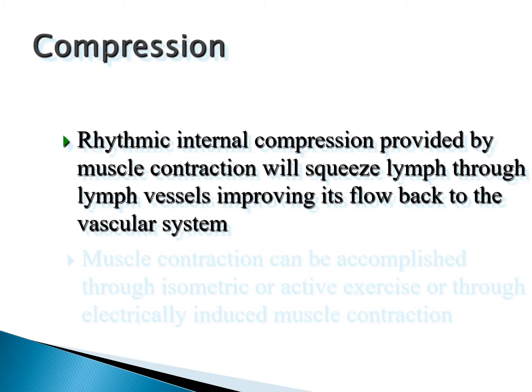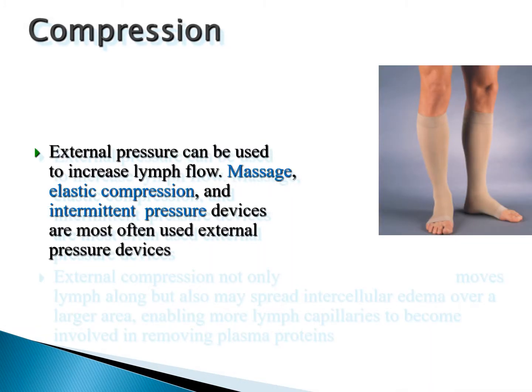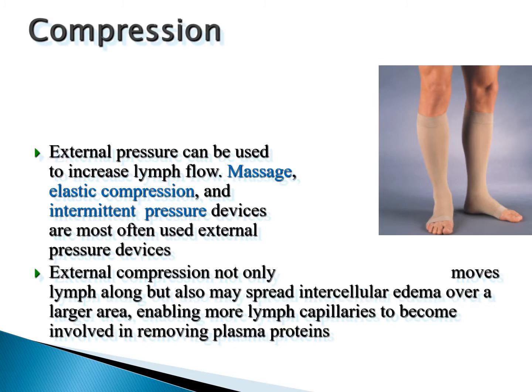Rhythmic internal compression provided by muscle contractions helps normal fluid move back. If there's a problem with muscular contractions or vessels, isometric activities may also be used — having a patient perform isometric contractions while their limbs are elevated. External pressure can increase lymph flow through massage, elastic compression garments, intermittent pressure devices, ALPS devices, and lymph drainage massage.